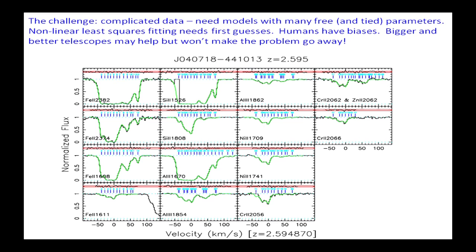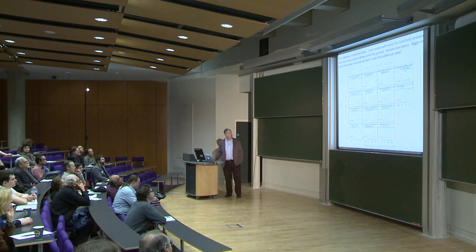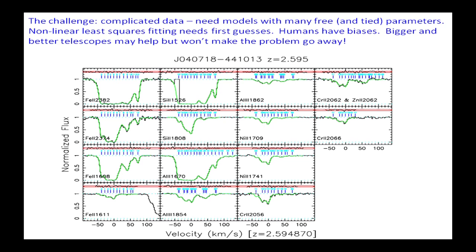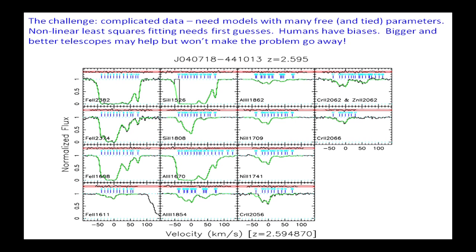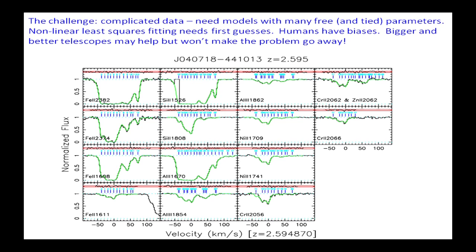This is a fairly typical spectrum — an absorption system at a redshift of 2.6. It exhibits many different species: singly ionized iron, singly ionized silicon, aluminium, doubly ionized aluminium, chromium and zinc lines, among others. As you can see, some of these lines are saturated — the intensity goes down to zero — so there's almost no information about the velocity structure in the gas. We're trying to look at positions of lines, and if a line is saturated you clearly can't do that. It's a simultaneous fit to all of that data at once, and you can see the model is very complicated and is not unique.